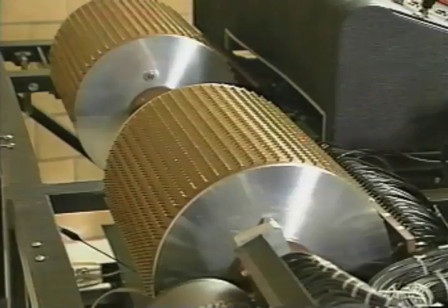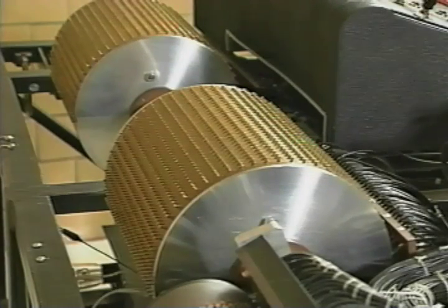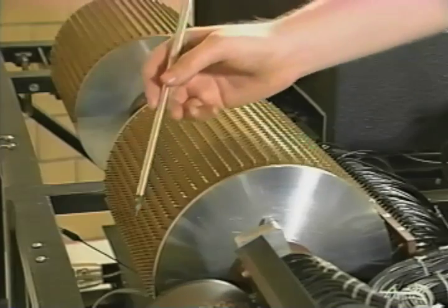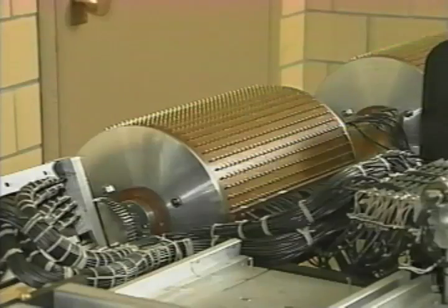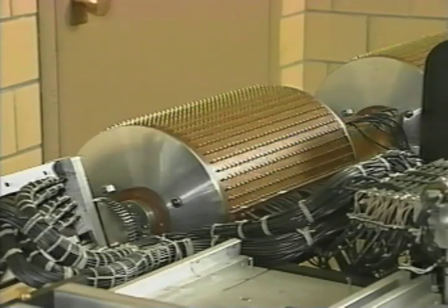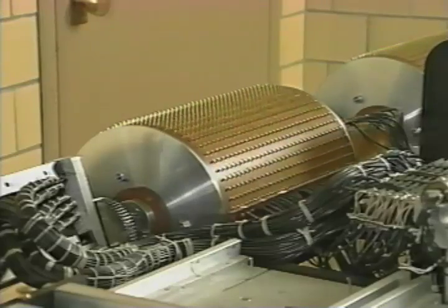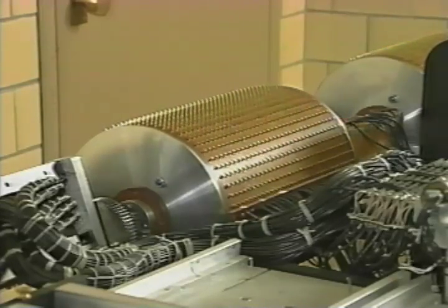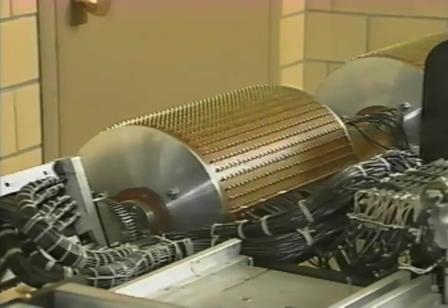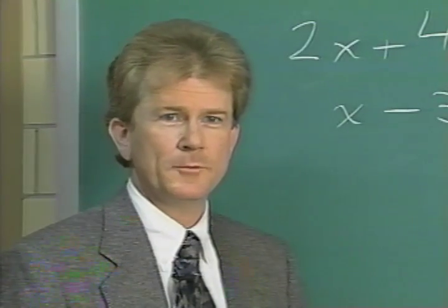The ABC was the first computer to use binary digits, or bits, to store numbers. The bits are arranged in columns on the memory drum. You can see 30 columns on this drum, and each column has 50 bits. So the entire storage of the computer is 3,000 bits — that's about a third of a kilobyte.